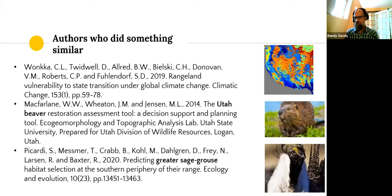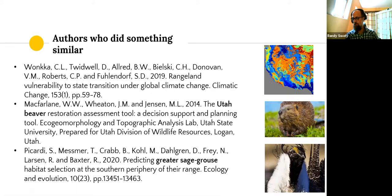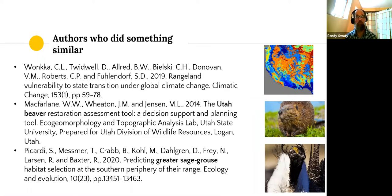Several other authors have done similar things, using LANDFIRE data to delineate areas for their research. Wonkka et al. used LANDFIRE existing vegetation type data to delineate non-forested ecosystems in research assessing rangeland vulnerability to state shifts in a changing climate. McFarland et al. and authors at Utah State published papers assessing riparian conditions in Utah and the West, helping prioritize appropriate places for beaver reintroduction or imitation beaver dams. Bacardi et al. used LANDFIRE existing vegetation type and slope data to extract appropriate ecosystems and elevations for greater sage-grouse modeling.